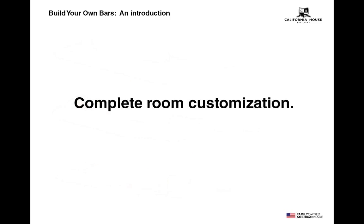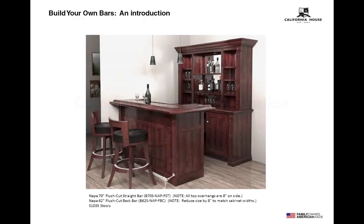Build Your Own Bar is not only the ability to customize individual cabinets in each bar, but also the ability to customize complete rooms by placing items together. Before we wrap up, I'd like to show you a couple of rooms that can quickly and easily be created with the Build Your Own Bar program by simply ordering standard items from the price list — no custom items are needed. The new California House Build Your Own Bar System is fantastic for customizing flush cut straight bars and flush cut back bars. These two simple pieces add tremendous flexibility as corners are prime spots for home bars.